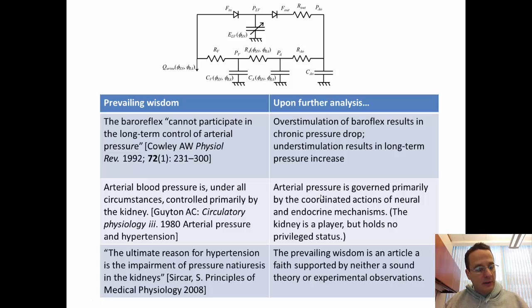In the end, what we do is we probe some of these ideas in the literature, this prevailing wisdom that, for example, the baroreflex cannot participate in the long-term control of arterial pressure. So that prevailing wisdom is a result of the observation that the baroreflex resets to a higher pressure. Therefore, if the baroreflex resets to a higher pressure, when pressure is increased, it's not telling you a signal to return the pressure to baseline. It's not really that simple. It turns out that that's a gross oversimplification, that interpretation. And it turns out that overstimulation of the baroreflex results in a chronic pressure drop. Understimulation results in a long-term pressure increase. This is true in actual physiological experiments, and it's true in our model.